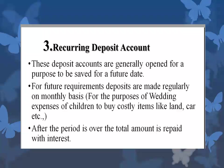The third type of account is the recurring deposit account, or RD account. These deposit accounts are generally opened for a purpose to be saved for a future date — deposits are made regularly on a monthly basis, for example for wedding expenses, or to buy costly items like land, car, or gold. After the period is over, the total amount is repaid with interest. For example, in an RD account, if a person keeps 1000 rupees every month for 2 years, at the end of 2 years he will get back his 24,000 rupees along with the rate of interest prescribed at the time of opening the account.